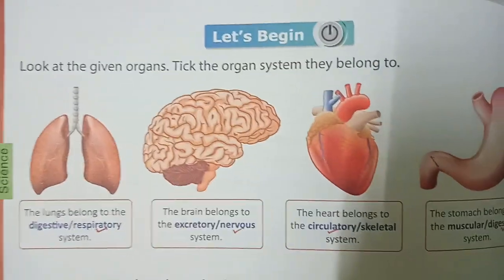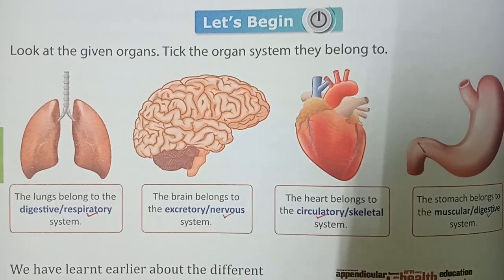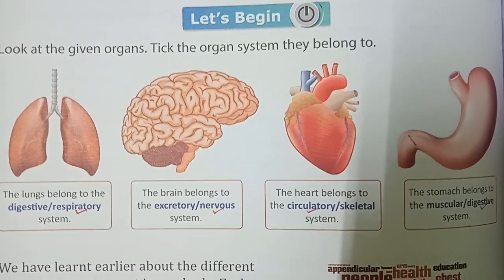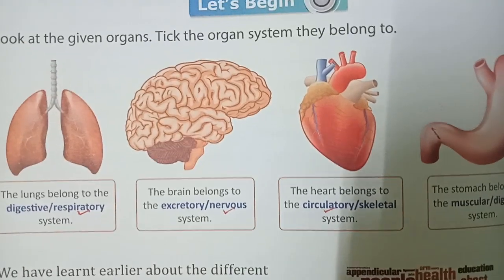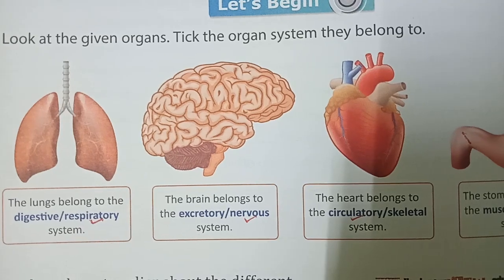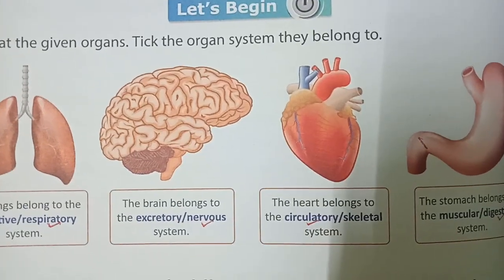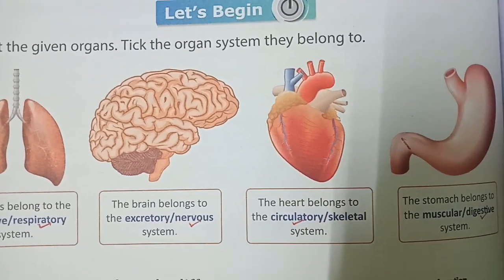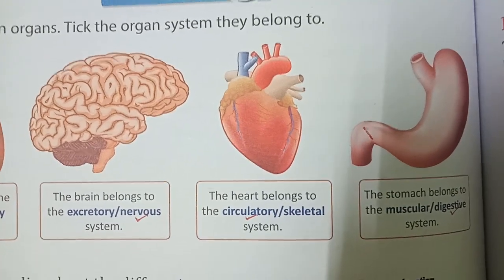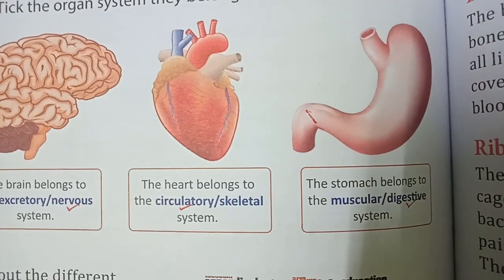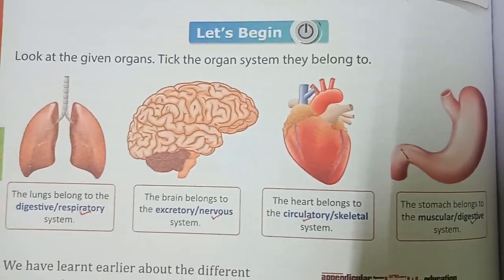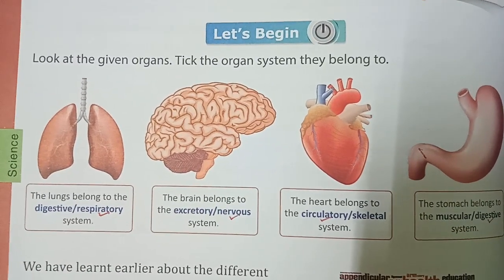In my previous video I gave you homework to identify the organ system each organ belongs to. Here are the answers: the lungs belong to the respiratory system, the brain belongs to the nervous system, the heart belongs to the circulatory system, and the stomach belongs to the digestive system.